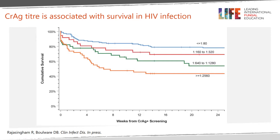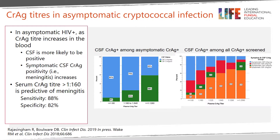Furthermore, CRAG titer is associated with survival in HIV-infected people. This figure combines four African cohorts of asymptomatic HIV-infected people screened for cryptococcal infection and treated with fluconazole, showing the effect of CRAG titer on 6-month survival. Those with a high titer had low survival. Among asymptomatic CRAG-positive persons, CRAG titers of 1 to 160 or greater are associated with increased mortality despite receiving standard of care antifungal therapy.